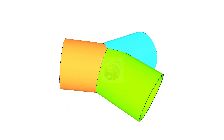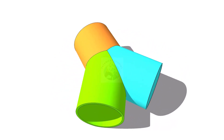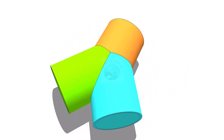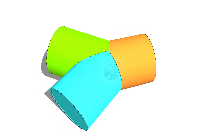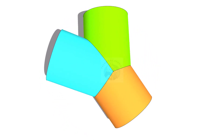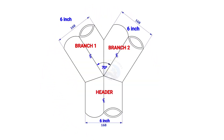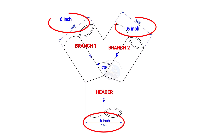Welcome to the technical studies. In this video we will learn how to lay out a Y branch. The size of the Y branch in this example is 6 inches and the included angle is 70 degrees.